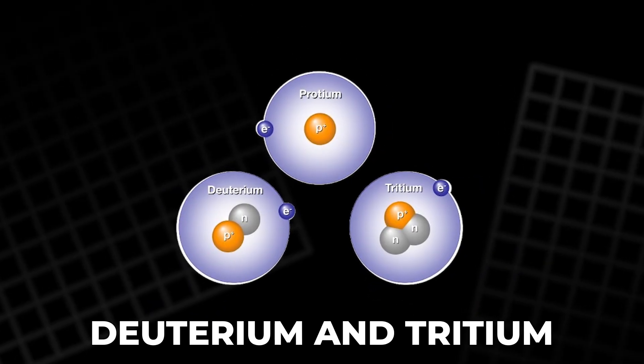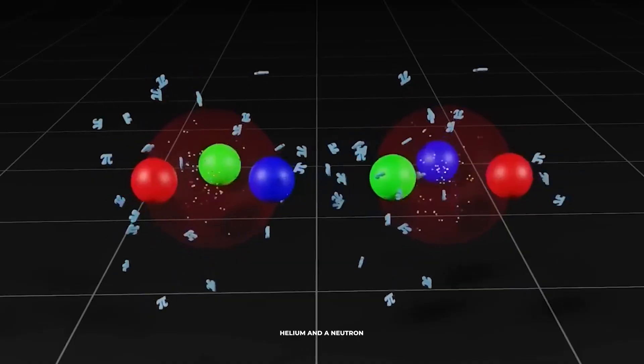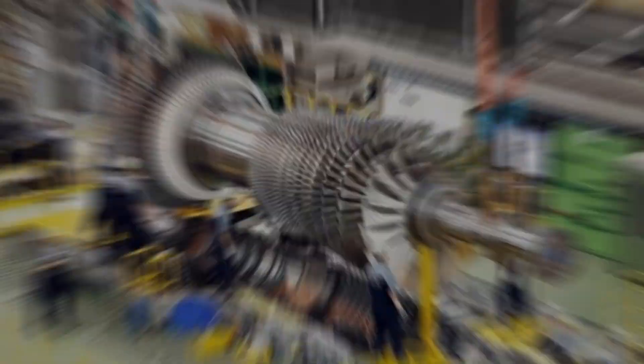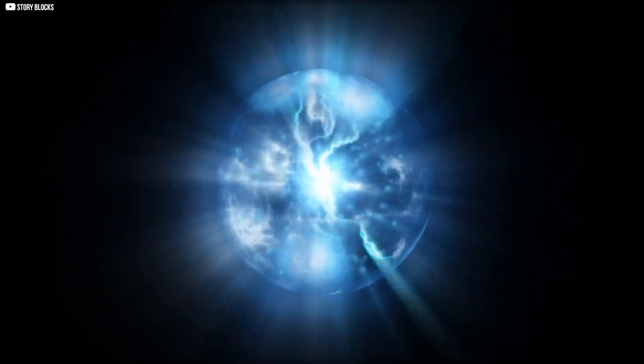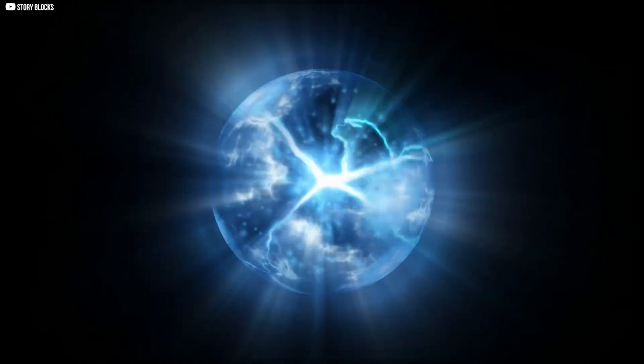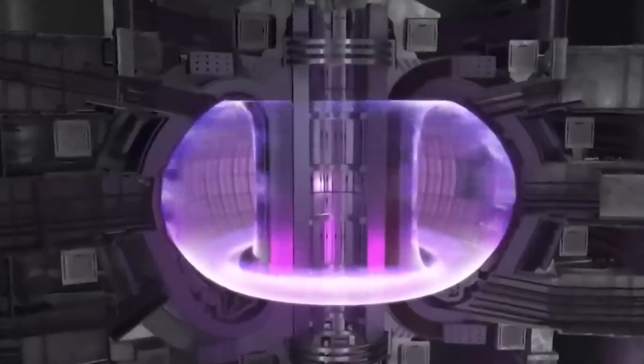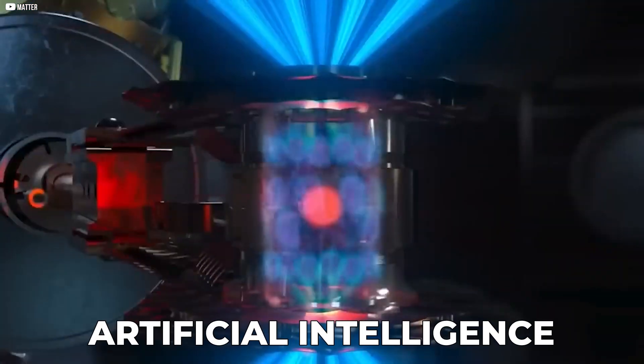The fuel? Deuterium and tritium, rare forms of hydrogen, are chosen for their high reactivity. When they fuse, they release helium and a neutron, along with vast amounts of heat. That heat could power turbines, homes, and entire cities. But only if the plasma stays still, and the reaction continues long enough. Every tokamak on Earth fights the same invisible battle, trying to keep chaos in a cage of magnets. And so far, chaos keeps winning. But a new player just entered the ring. Artificial intelligence.